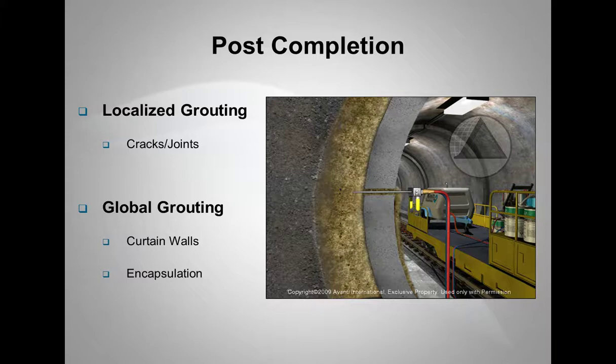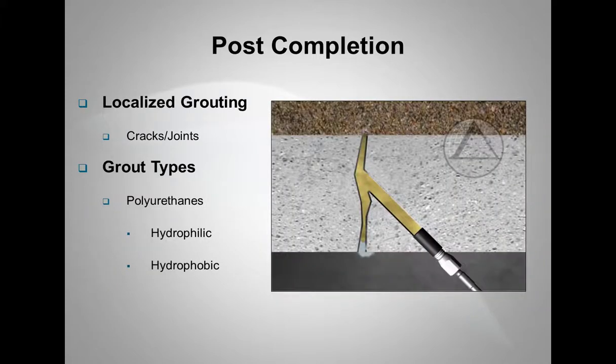Post-completion grouting, after the tunnel's been in service for some time, either immediately or several years later, generally, this is going to fall into two different types of grouting techniques, localized grouting or global grouting. In localized grouting, again, we're focusing on just the cracks and the joints, whereas more globally, we would be looking at curtain walls behind the tunnel structure or fully encapsulating the tunnel structure. In localized grouting, this is cracks and joints. Predominantly, it's going to be polyurethanes, either hydrophilic or hydrophobic.